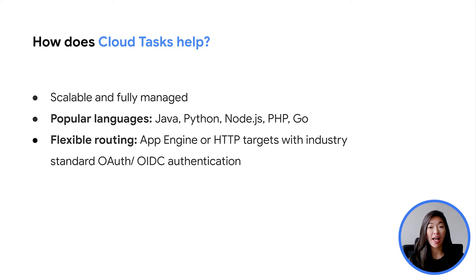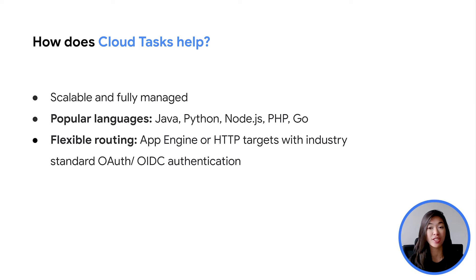It is scalable and fully managed with popular client libraries of your choice. You can enqueue tasks using the REST API from any language and anywhere. Your tasks can be executed on App Engine or any HTTP endpoint that can securely reach Google Kubernetes Engine, Compute Engine, and Cloud Run, or on-premises systems using industry-standard authentication. With easy-to-integrate APIs, Cloud Tasks can be a great way for you to simplify your architecture.